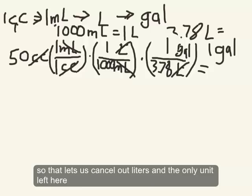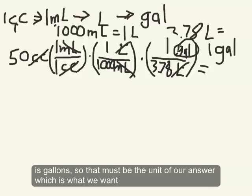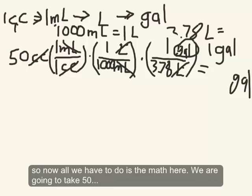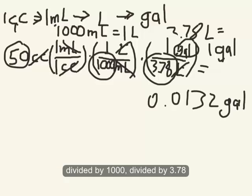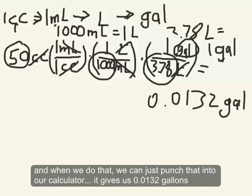And the only unit left here is gallons. So that must be the unit of our answer, which is what we want. So now all we have to do is the math here. So we're going to take 50 divided by 1,000 divided by 3.78. And when we do that, we can just punch that into our calculator and it gives us 0.0132 gallons.